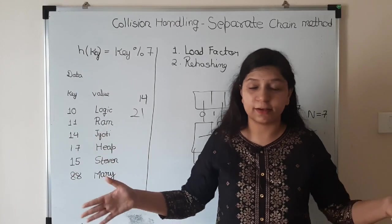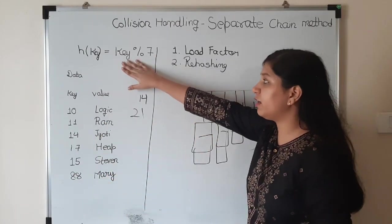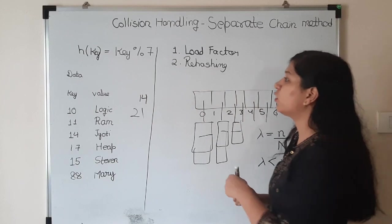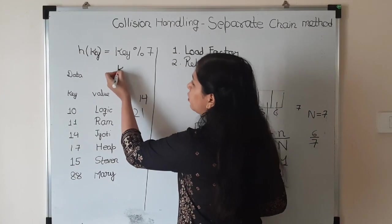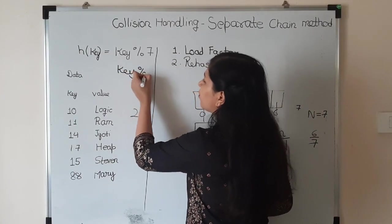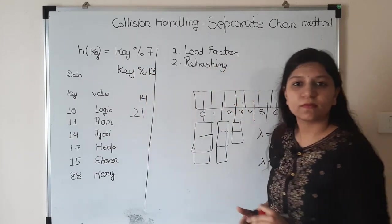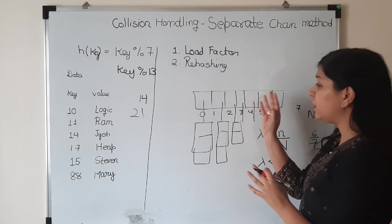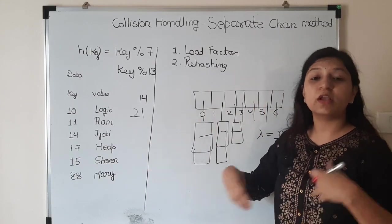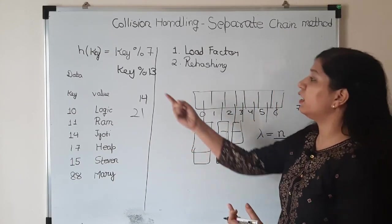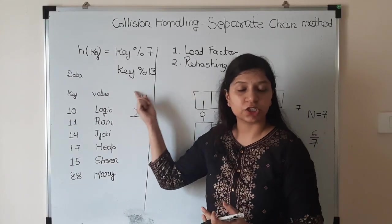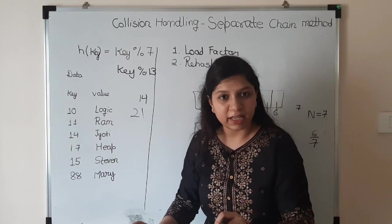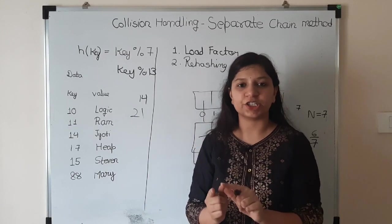Let's say it was key modulo 7, you're going to make it around double - key modulo 13. Now you will rehash all the values that you have stored using this hash function key modulo 13. This is called rehashing.